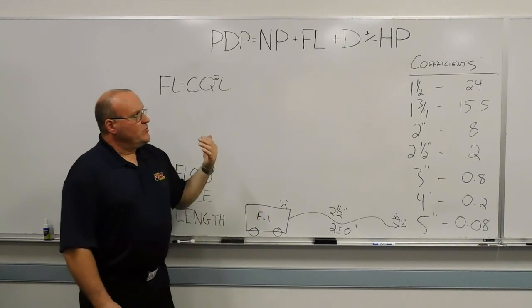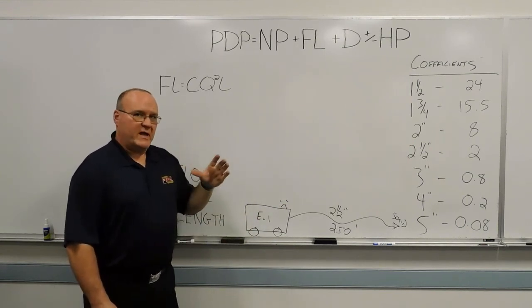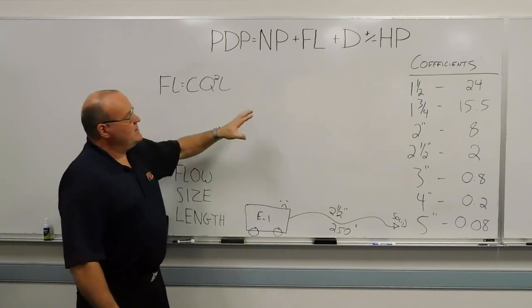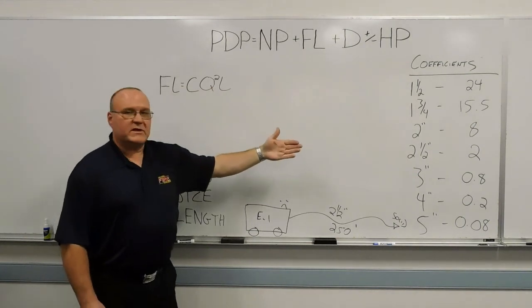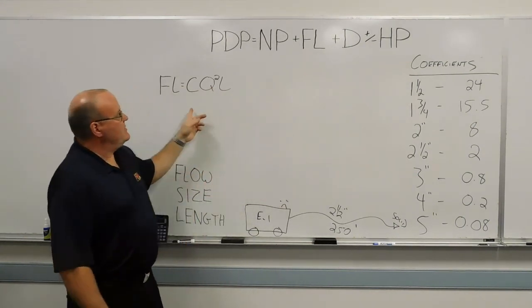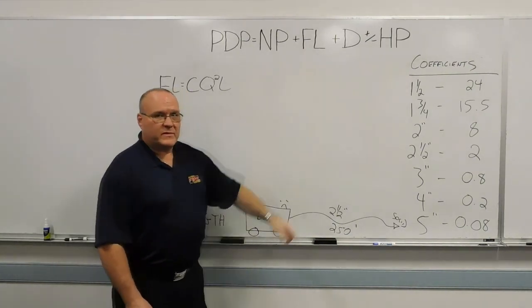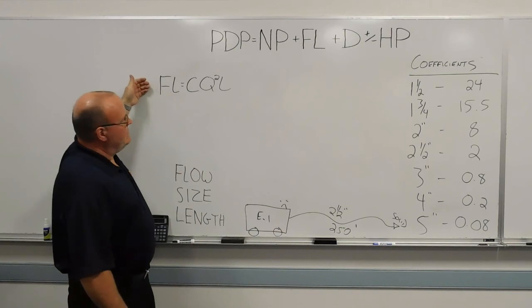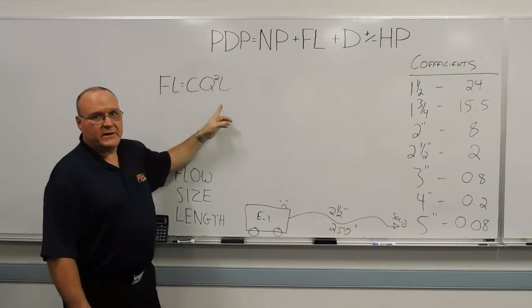So the previous training minutes we focused mainly on the Q-square or the hand method, and then the user-friendly fire ground hydraulics. And then today we're going to be talking about the coefficient method. So with the coefficient method, here's your formula that you would plug in to your friction loss. So that formula to use the coefficient is friction loss equals CQ²L.